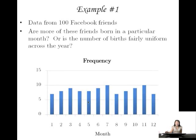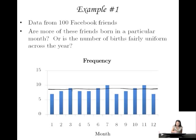Recall example one. Here we looked at a data set of 100 Facebook friends and whether more of these friends are born in a particular month or another. No particular month is super popular. This is what we call a uniform distribution — if you squint and blur your vision a little bit, it's almost like there's a flat line, with everybody hovering close to that line. There's relatively little change from month to month.